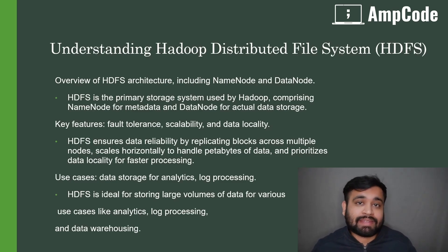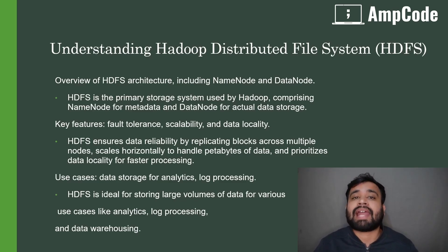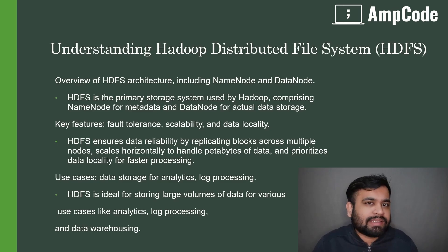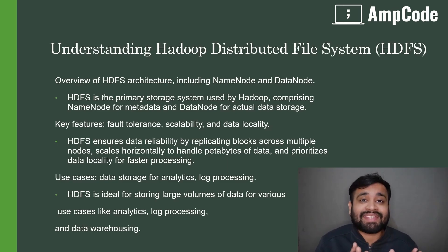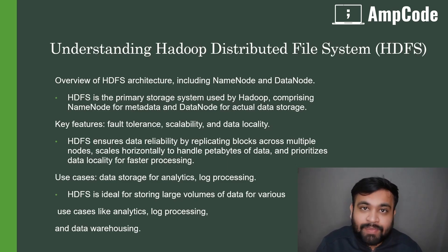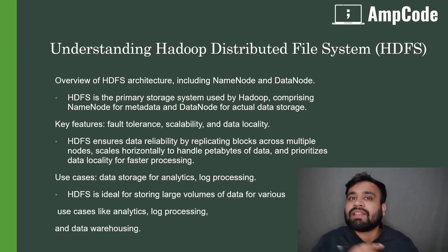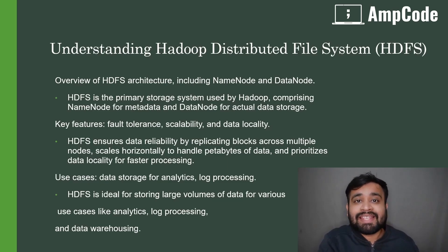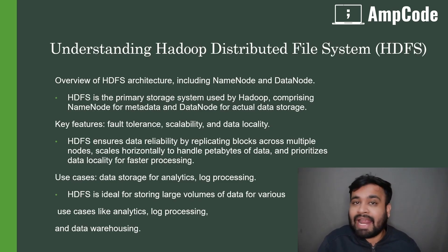Hadoop is also highly scalable horizontally, meaning we can add as many DataNodes to our cluster as needed without any issues, because they are highly available, replaceable, and very cheap since we use commodity hardware. Compared to vertically scaling a single machine — which requires adding lots of RAM and storage — horizontal scaling means adding multiple machines working in parallel to handle big data. This makes it a very cost-effective solution, and you can scale your application to petabytes of data by simply adding more worker nodes to your cluster.